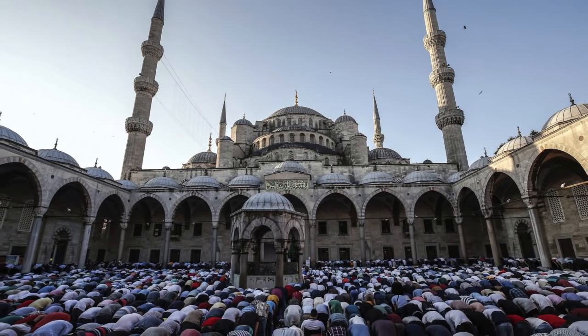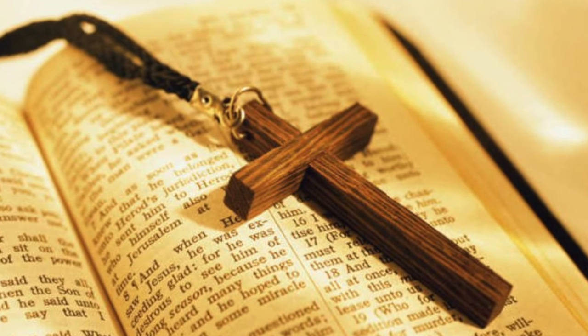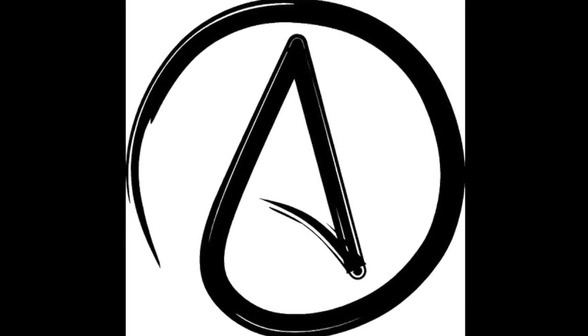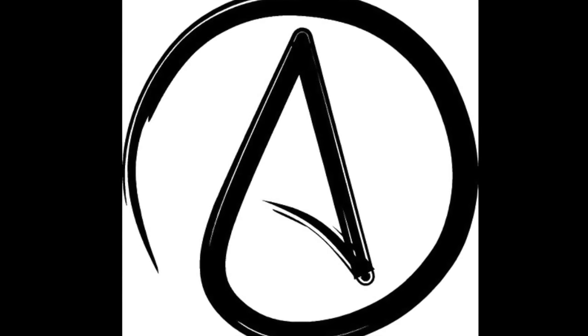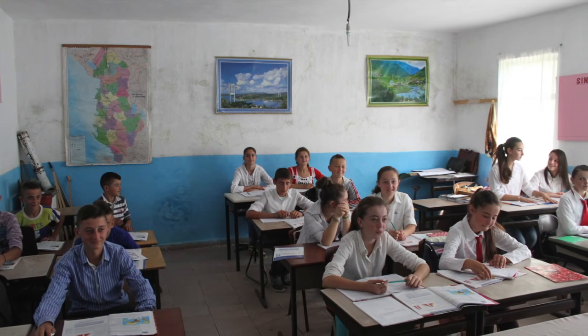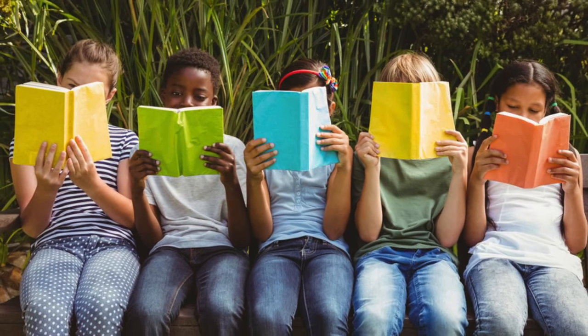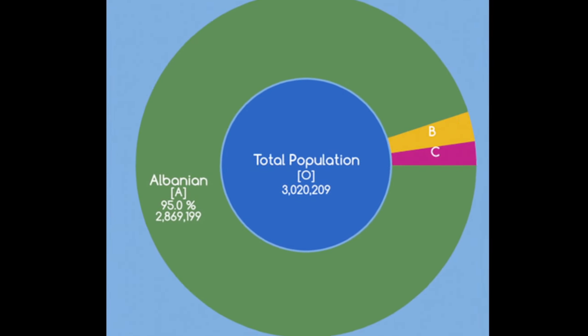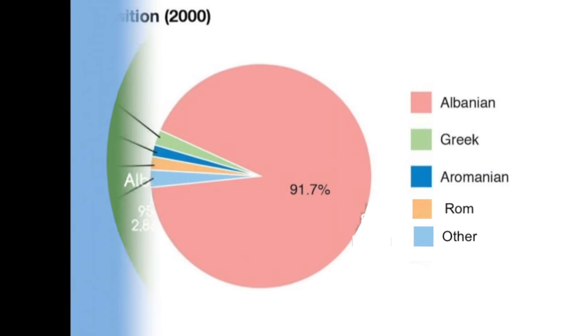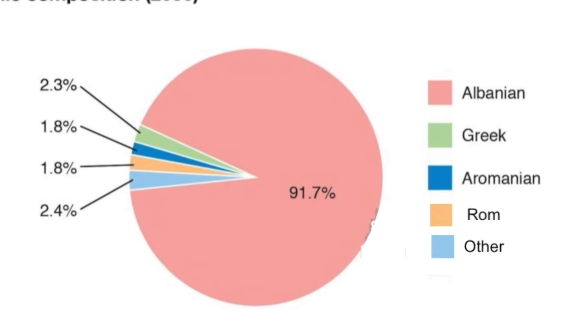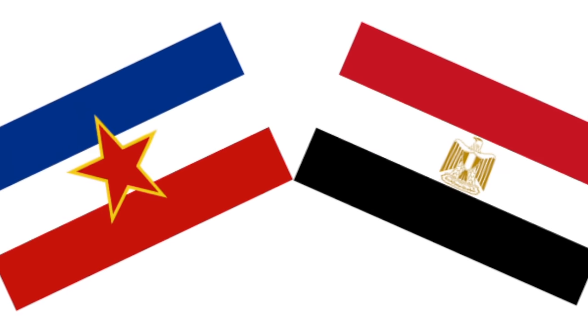The main religion in Albania is Islam, which approximately 50% of Albanians affiliate with. The second most practiced religion in Albania is Christianity. There is also a significant amount of non-religious people in Albania. Albanian education is well established as a successful institution. The literacy rate in Albania is 98.7%, qualifying Albania as the 25th most literate country. Finally, Albanians are the most populous ethnic group in Albania. The country recognizes nine minority groups: Aromanians, Balkan Egyptians, Greeks, Bulgarians, Bosniaks, Macedonians, Montenegrins, Serbs, and Roma.